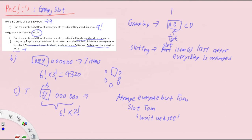Because if this is the group of Spike and Jerry, Tom cannot be immediately beside them on either side. So Tom can only be placed in the remaining five gaps — five choose one, or simply five. This gives us 720 times 2 times 5, which equals 7200 arrangements.